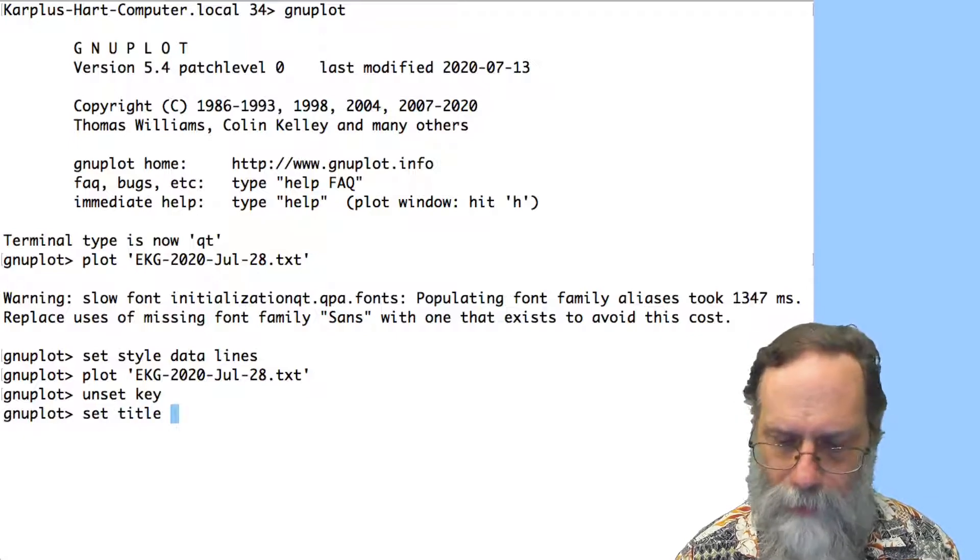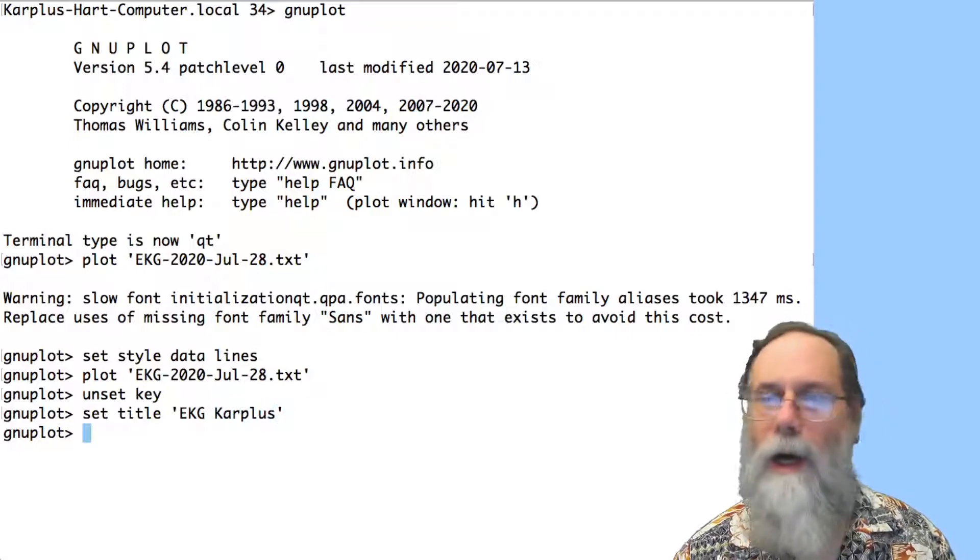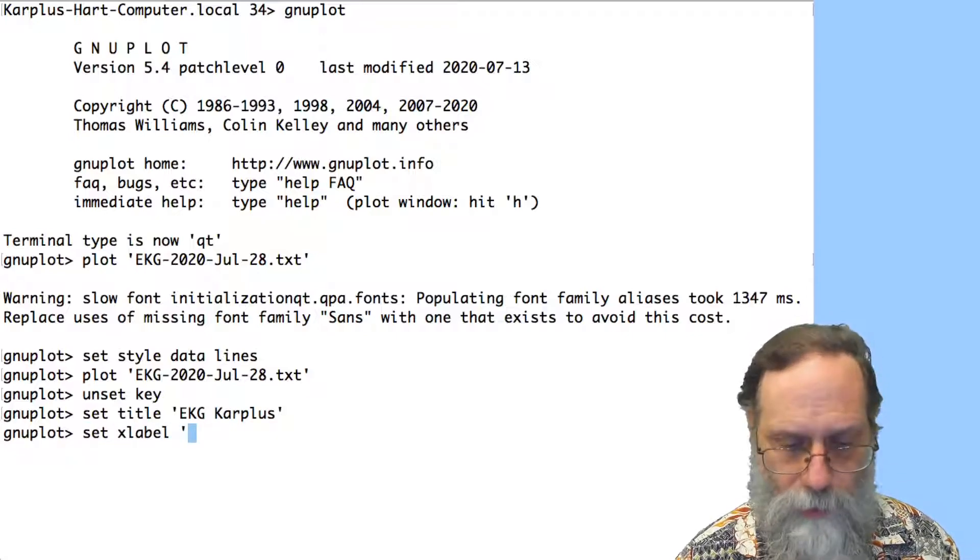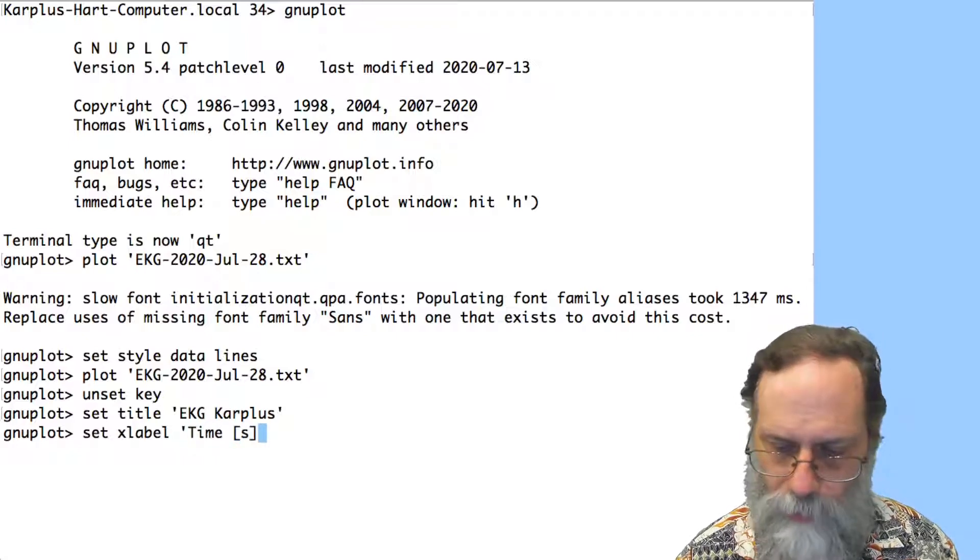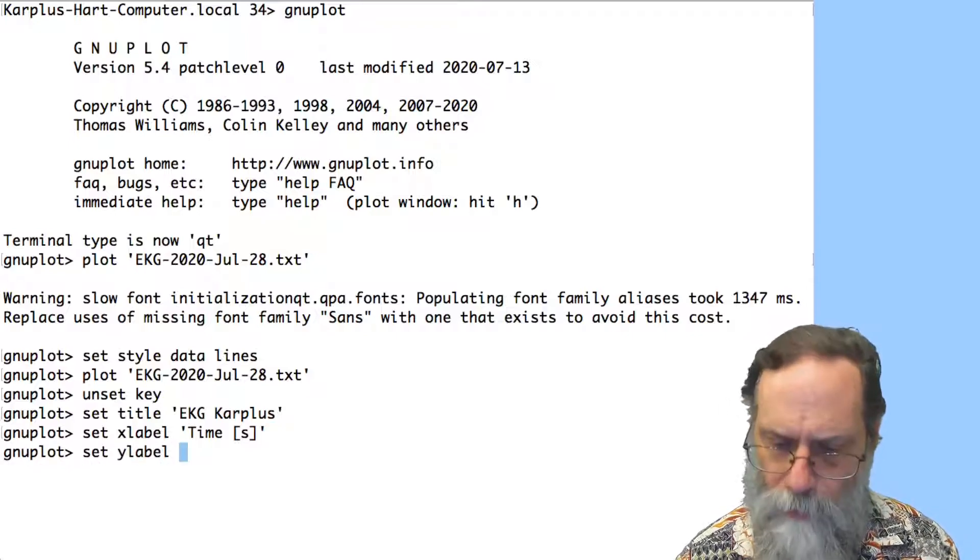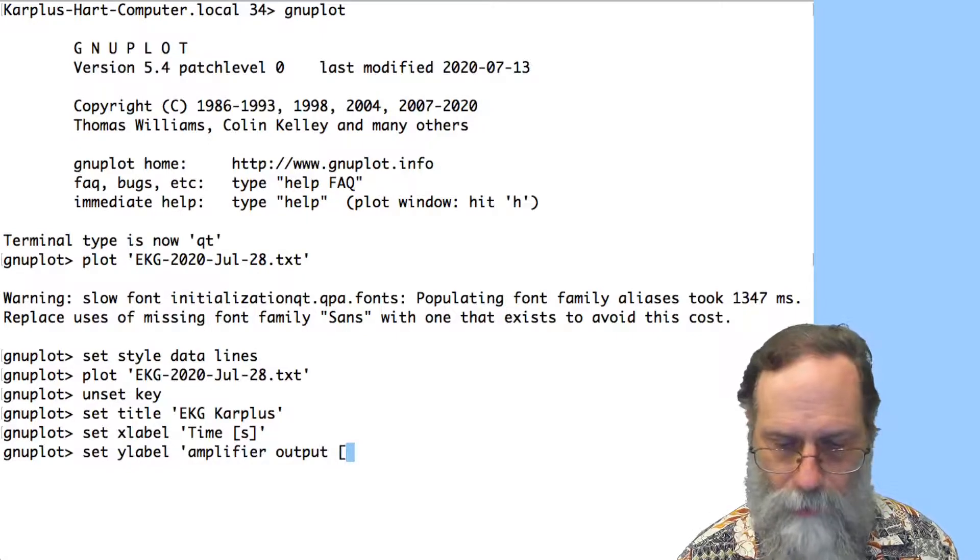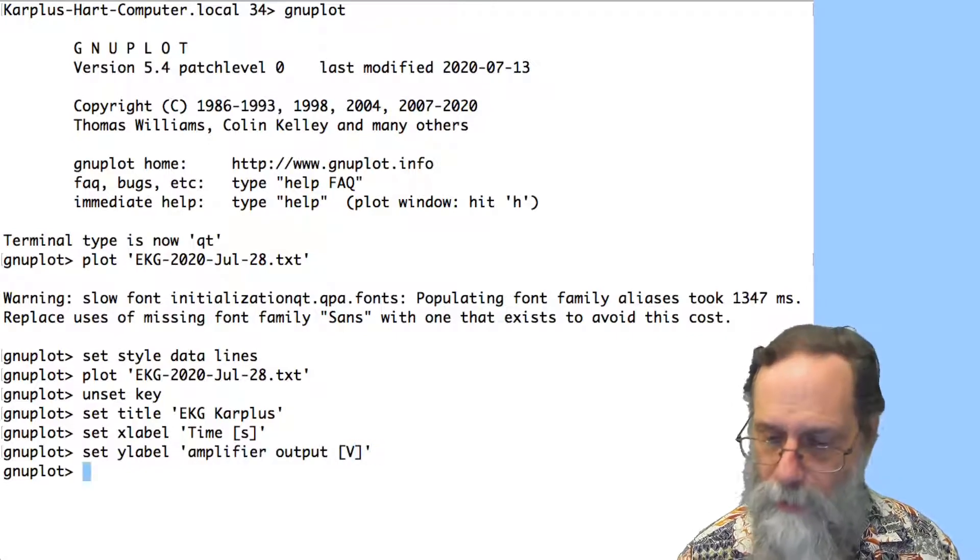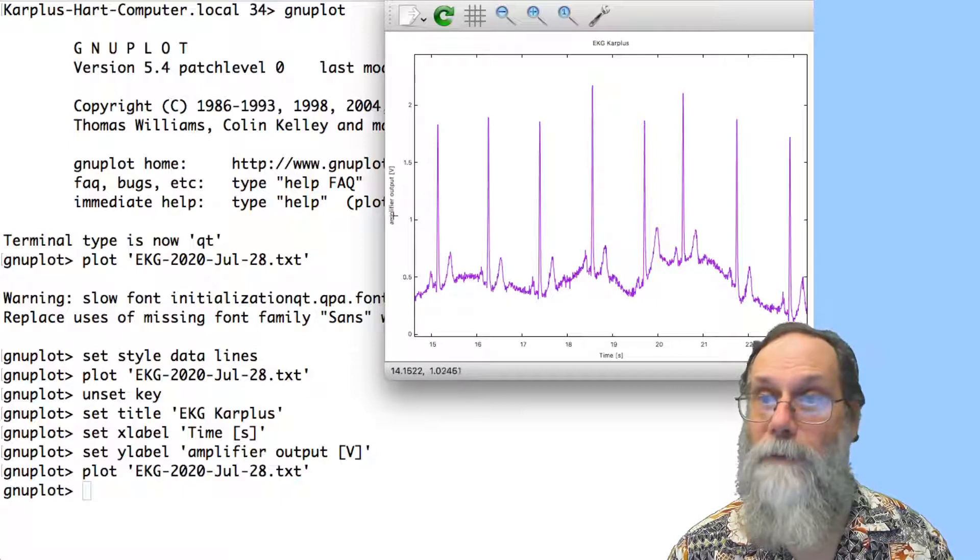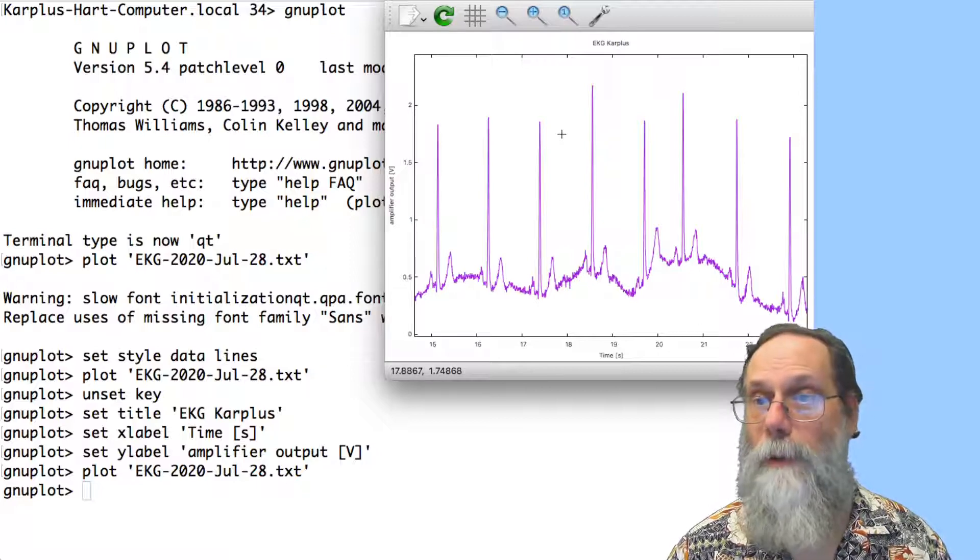So I can get rid of that with unset key. Let's add some titles also. You can put a title and it's just ekg and give the patient name. I can now label my axes too. Set xlabel. That one was time. And in square brackets, I'll put the units, which were seconds. I can set the y-label. What that was, it was the amplifier output. And it was in volts. Now if I go back and redo the plot, what I have got is amplifier outputs in volts, time is in seconds, and I've got ekg carplus. That's the title of the whole thing.